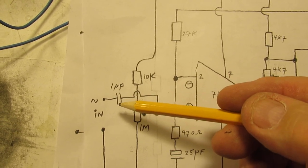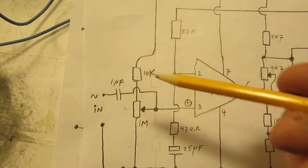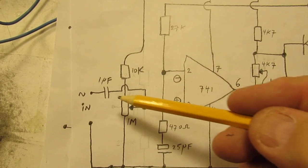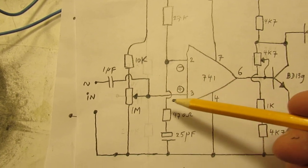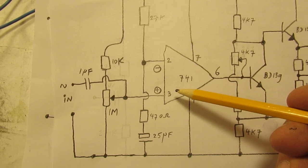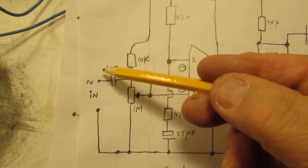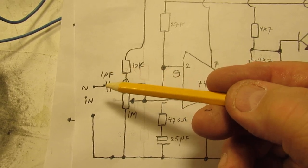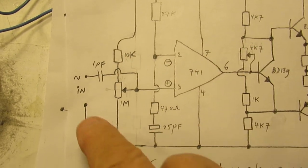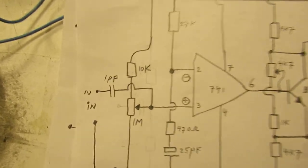I always use a non-polar capacitor to prevent DC bias, DC entering the 741 stage. So this is completely galvanic separation here.